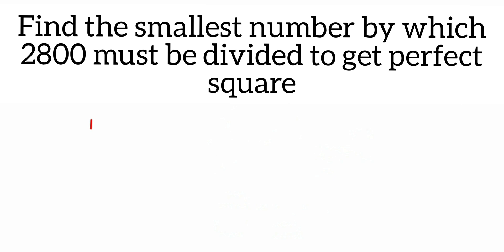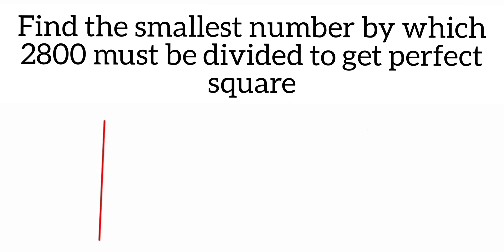Here's a question from squares and square roots: find the smallest number by which 2800 must be divided to get a perfect square. To solve this problem, we're going to use the prime factorization method. First, I'll do the prime factorization of 2800 and try to make pairs of the factors. The one which doesn't have a pair will be the number to divide by.